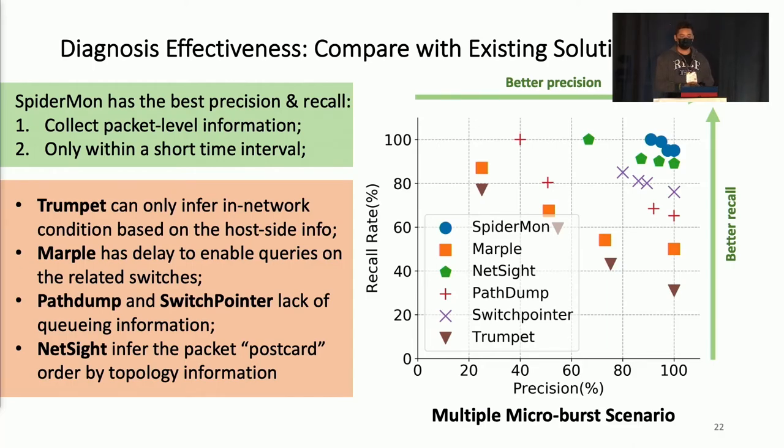For other alternative solutions, Trumpet can only infer the network condition based on the host side information because it's a host side solution. Marple needs time to enable the queries in the network, so it can have some delay. This delay will let the information be flushed out already. PathDump and SwitchPointer lack queueing information, so it's not so accurate. NetSight collects all packet information, but the problem is that they reconstruct the packet order without having the order, so it is also not accurate in some cases. But it's still very good, but with very high overhead.